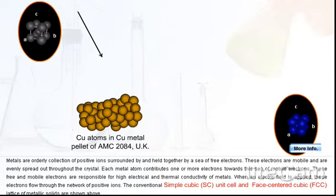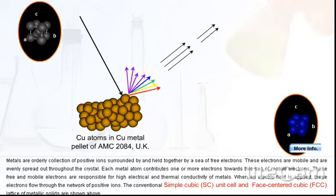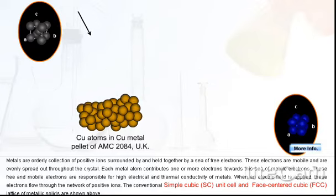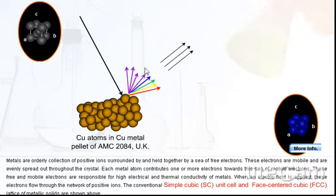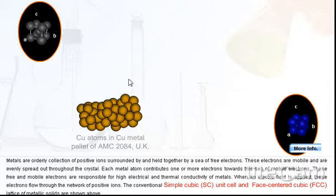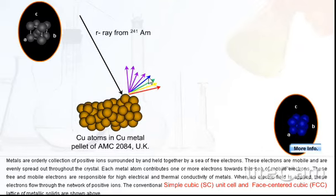These free and mobile electrons are responsible for high electrical and thermal conductivity of metals. When an electrical field is applied, these electrons flow through the network of positive ions. The conventional simple cubic unit cell and face-centered cubic lattice of metallic solids are shown above.